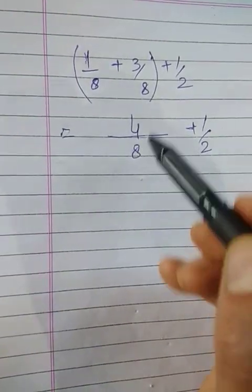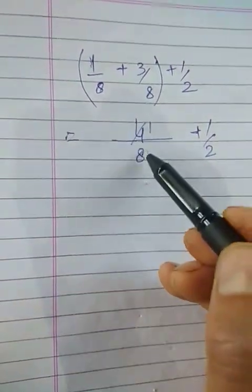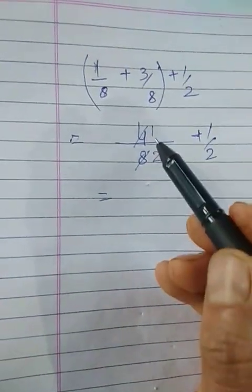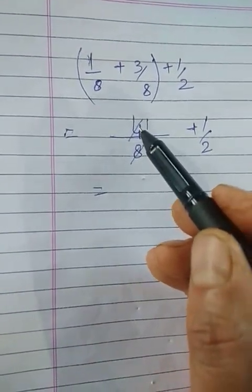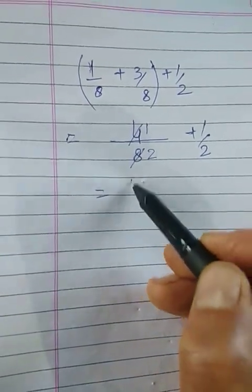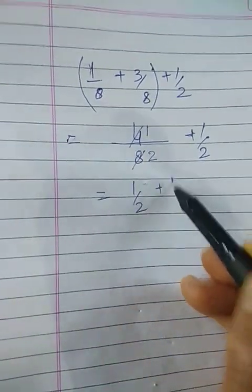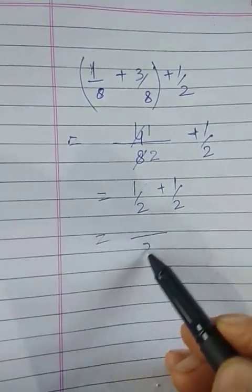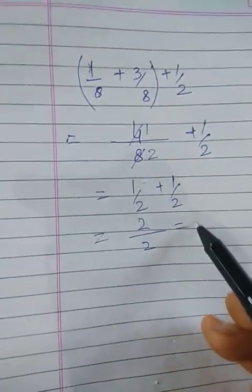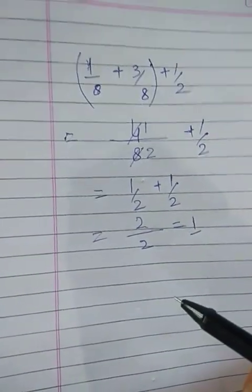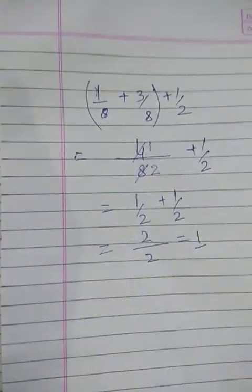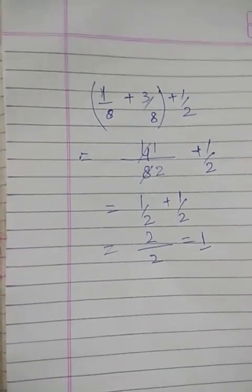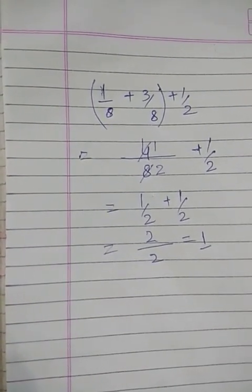Looking at numerators and denominators: 1 by 2 plus 1 by 2 equals 2 by 2, which equals 1. This is how we add fractions. We will continue addition of fractions in our next lecture. Till then, khuda hafiz.